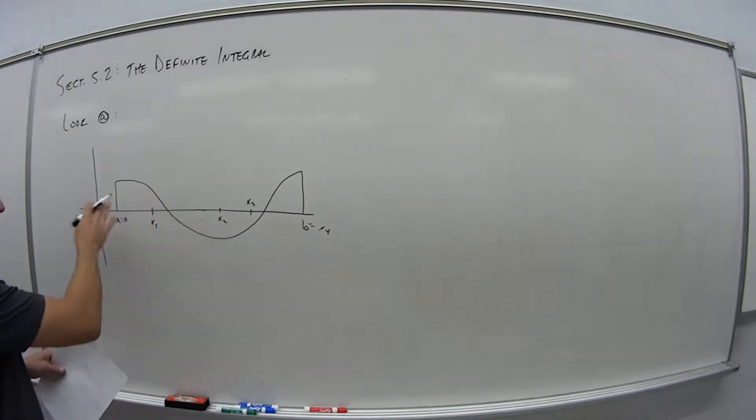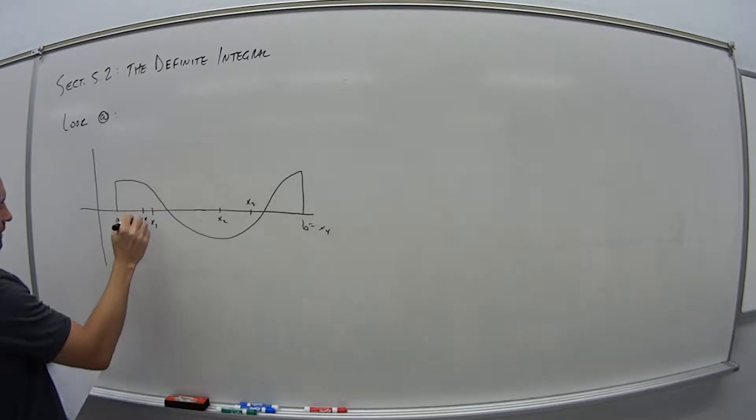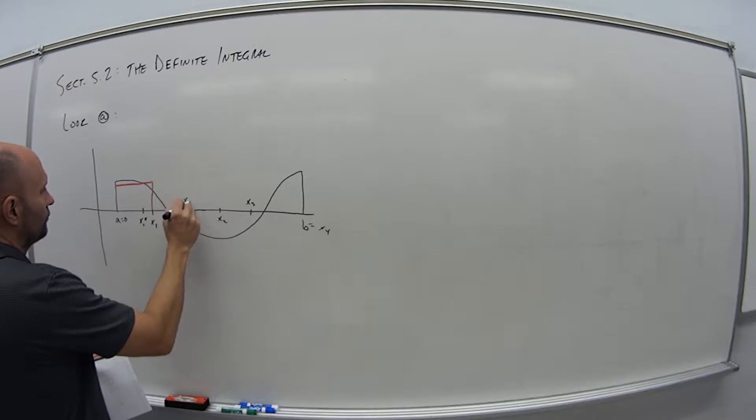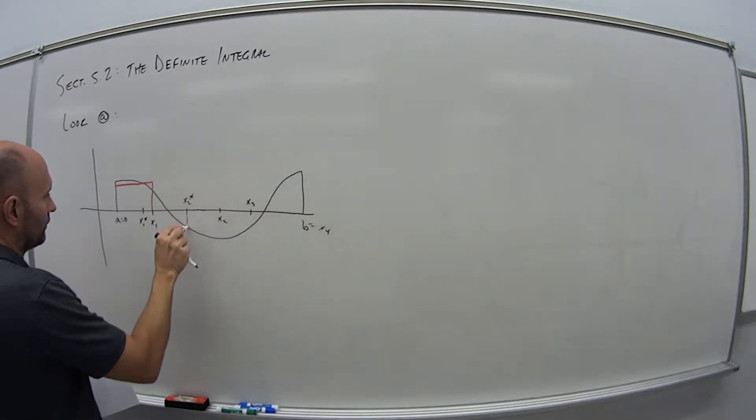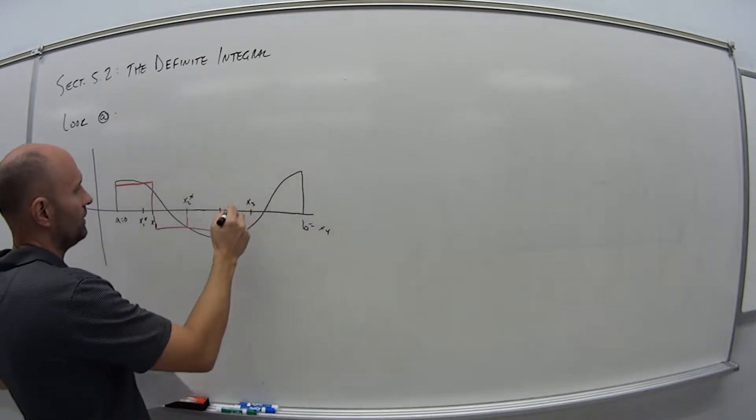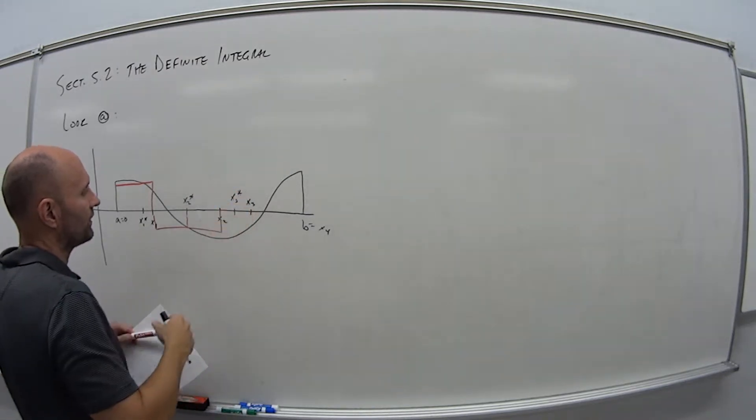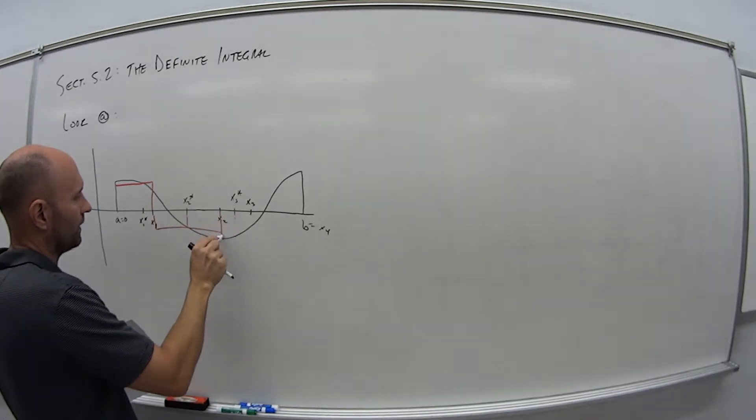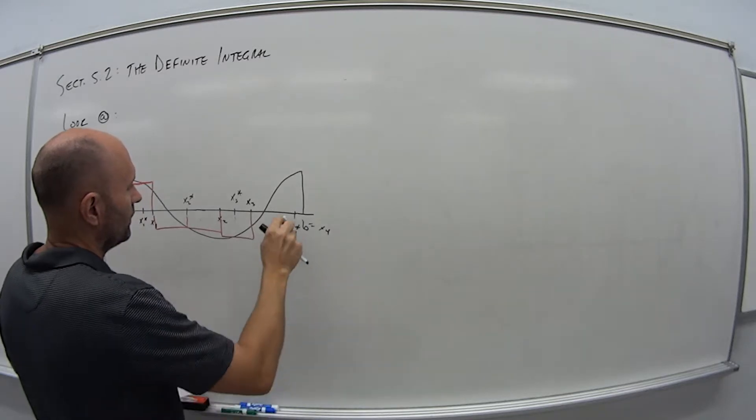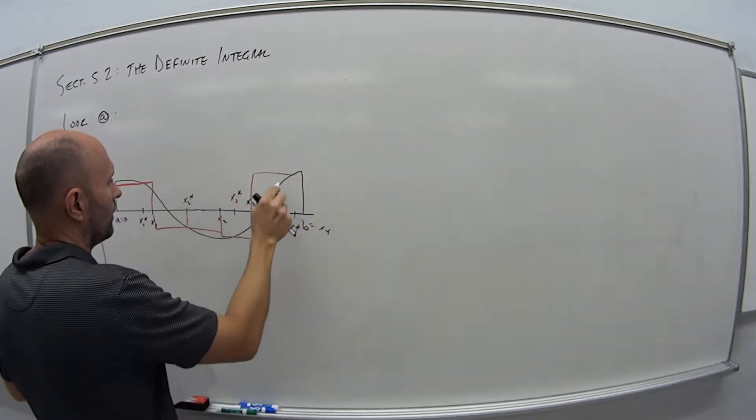So now, if I was to pick any point within these intervals. Let's say I'm going to pick this one here, X1 star. If I take this up to where the curve hits and then draw the rectangle that fits in the area, I would get that. Same for X2. Maybe I choose X2 star to be here. So I go to where that hits the curve, take that whole rectangle for that interval.